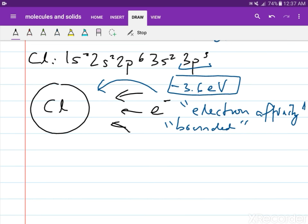Now, if this electron were to go inside chlorine, our chlorine atom will be negative.